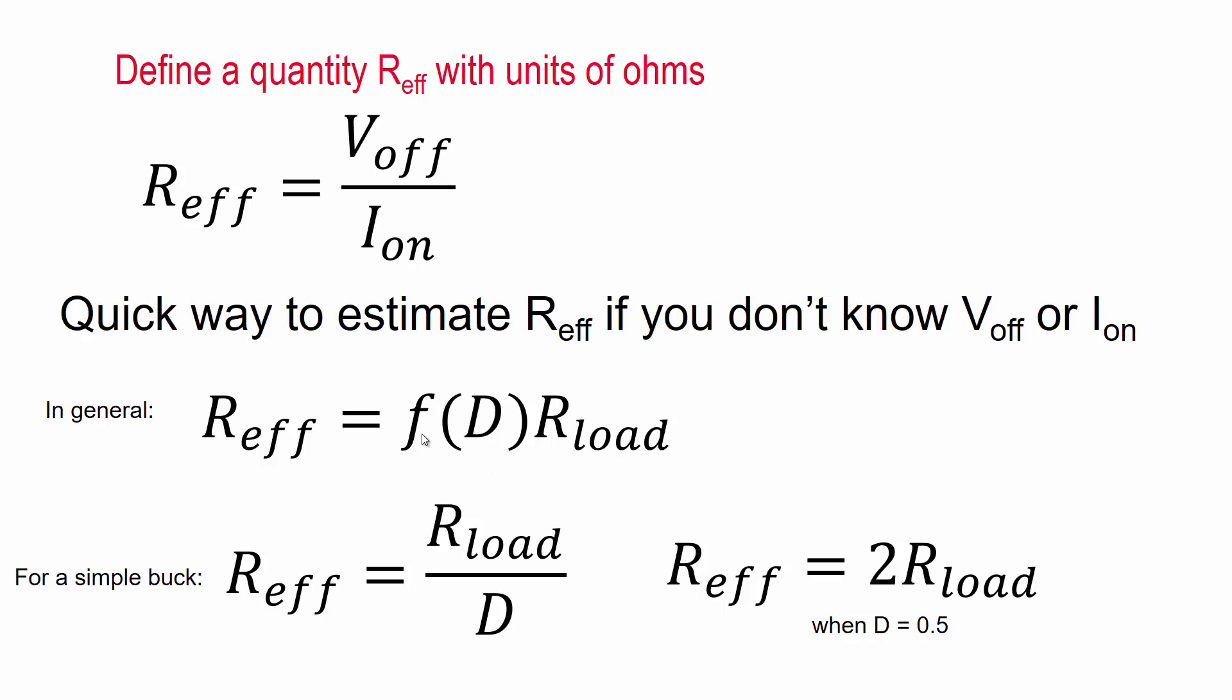For example, for a simple buck, the function is just one over D, the duty cycle. So for example, when D is a half for the buck circuit, R_effective is simply twice the load resistance. So if you know the load resistance, just double that to get R_effective.